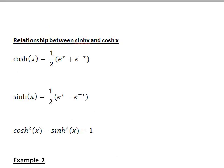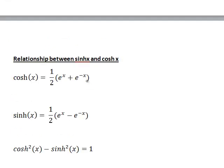If we think about cosh(x), cosh(x) is a half e to the x plus e to the negative x. Now e to the x is a positive number and so is e to the negative x, so that means that cosh(x) is always going to be positive.